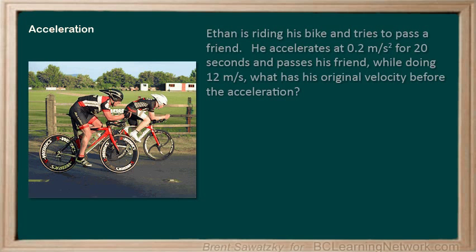Let's try another example. Ethan is riding his bike and tries to pass a friend. He accelerates at 0.2 meters per second squared for 20 seconds and passes his friend while doing 12 meters per second. What was his original velocity before the acceleration? Let's first list what we know here. We see the given acceleration a is 0.2 meters per second squared. Note that if we ever get mixed up with what's what, acceleration is easy to recognize just by looking at the units. Two time units on the bottom is a great double check that we're looking at an acceleration. What else do we know? We see that the time of his acceleration is 20 seconds.